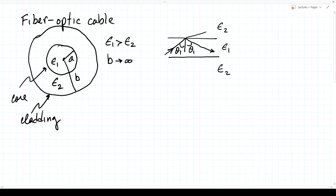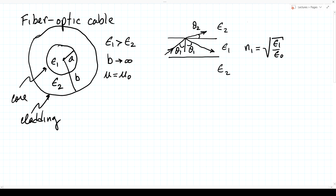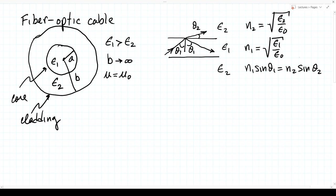If some of the field is transmitted into the second medium it goes at angle theta 2. We define the index of refraction: in all cases we take mu equal to mu 0 (no magnetic effect), so n1 is the square root of epsilon 1 over epsilon 0, the square root of the dielectric constant. In the cladding, n2 is the square root of epsilon 2 over epsilon 0. At the interface, Snell's law gives n1 sine theta 1 equals n2 sine theta 2, as shown in the oblique incidence lecture.